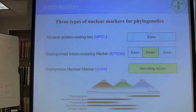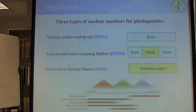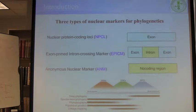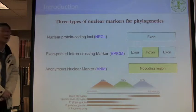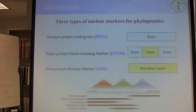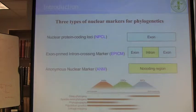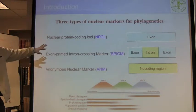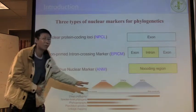In phylogenetic studies, we use a piece of DNA, which we call markers. Depending on the location of this piece of DNA, we have three types of nuclear markers. If the piece of DNA is within an exon, we call it nuclear protein coding loci — that is called NPCR markers. If it's across an intron and your primers are within the two exons, this is called EPICM markers. If the DNA is located within a non-coding region, it's called anonymous nuclear markers. These three types of DNA markers have different evolutionary rates, so you can use them for different questions.